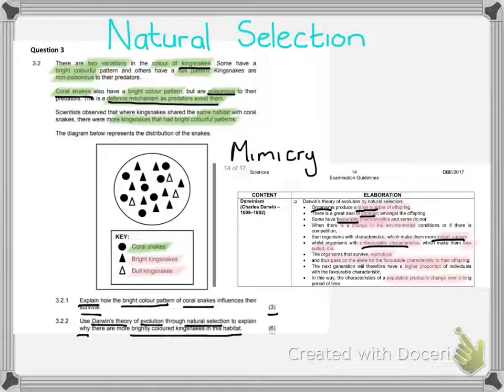Then we need to point out that those with the unfavorable characteristics, in this case, which is the dull colored snake, they are going to die, which means that organisms that have the favorable quality, which is the brightly colored color, they are going to reproduce, they are going to pass this allele on, and there is going to be a higher proportion of brightly colored kingsnakes than there are dull. And so what I'm going to do for you is I'm going to insert the memo answer so that you can see it and that you can look over it.